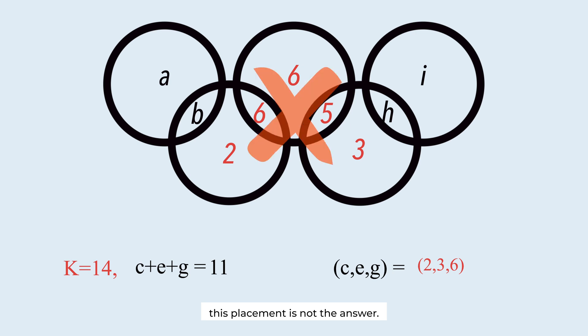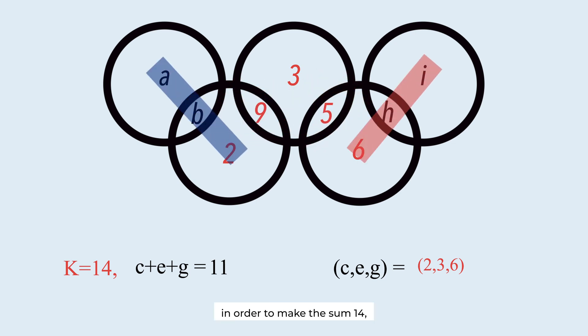This placement is not the answer. If E is 3, C and G are 2 or 6. This is 9. This is 5. In order to make the sum 14, 4 and 8 go here, 1 and 7 go here. Success!